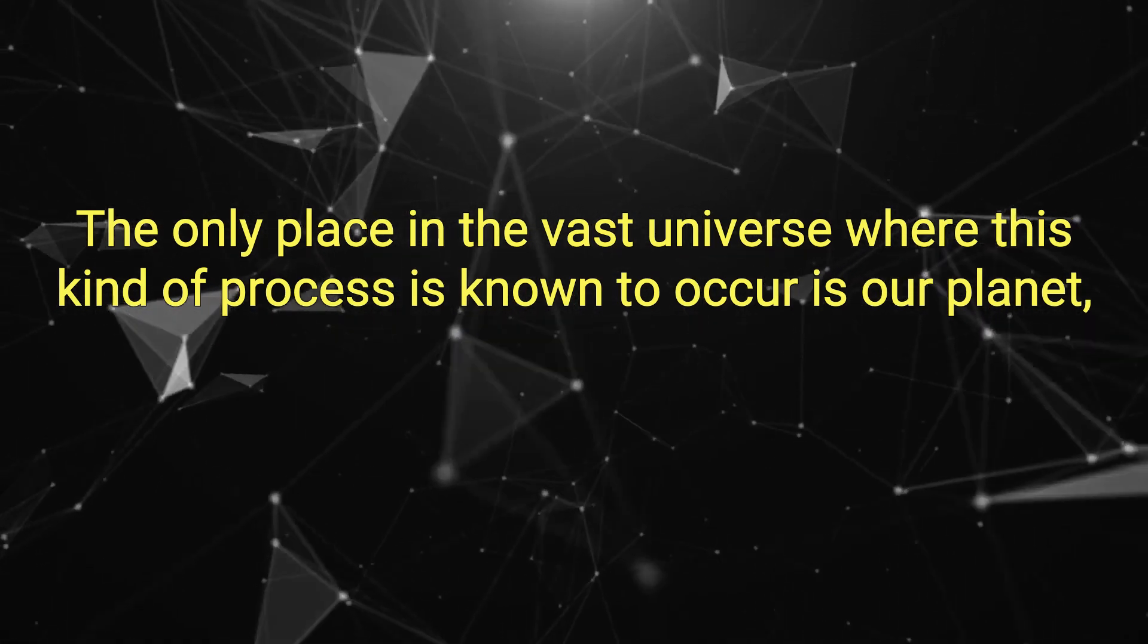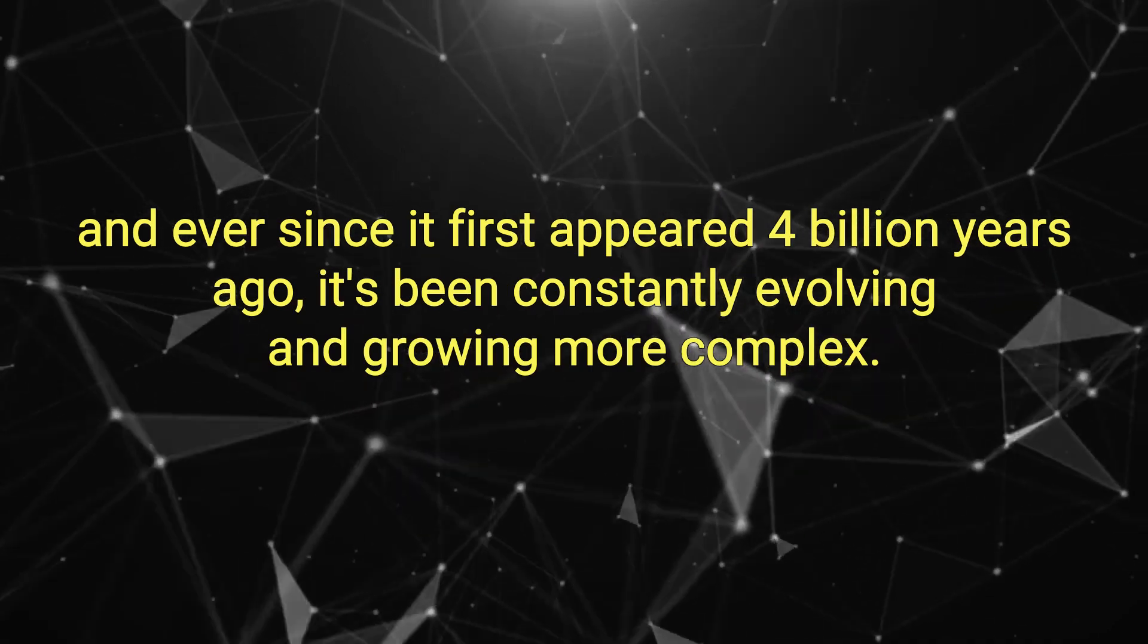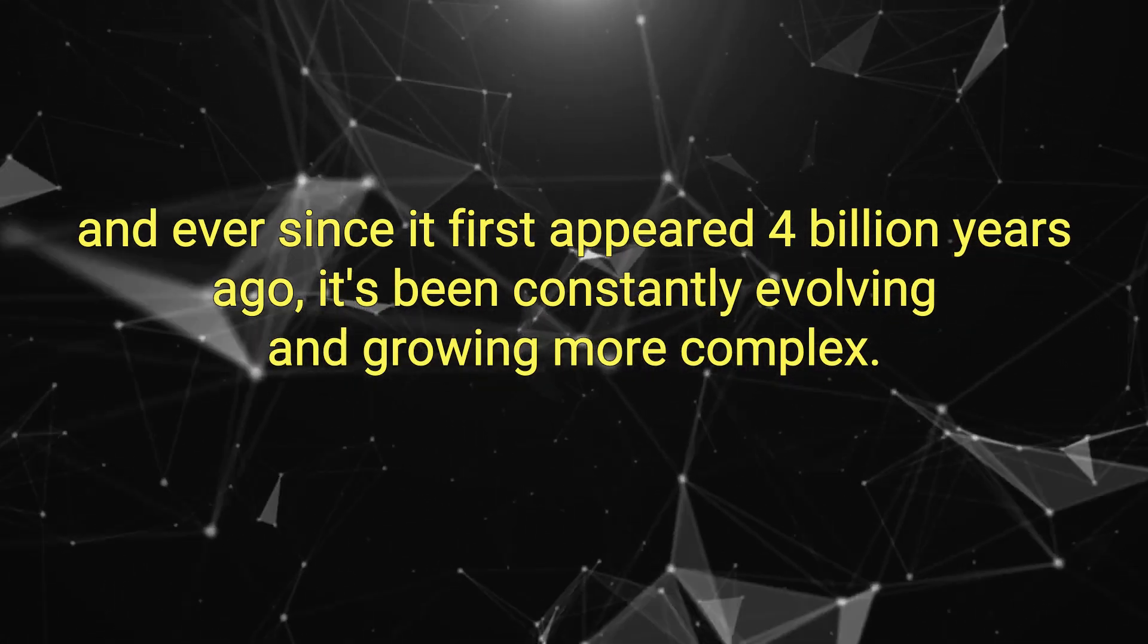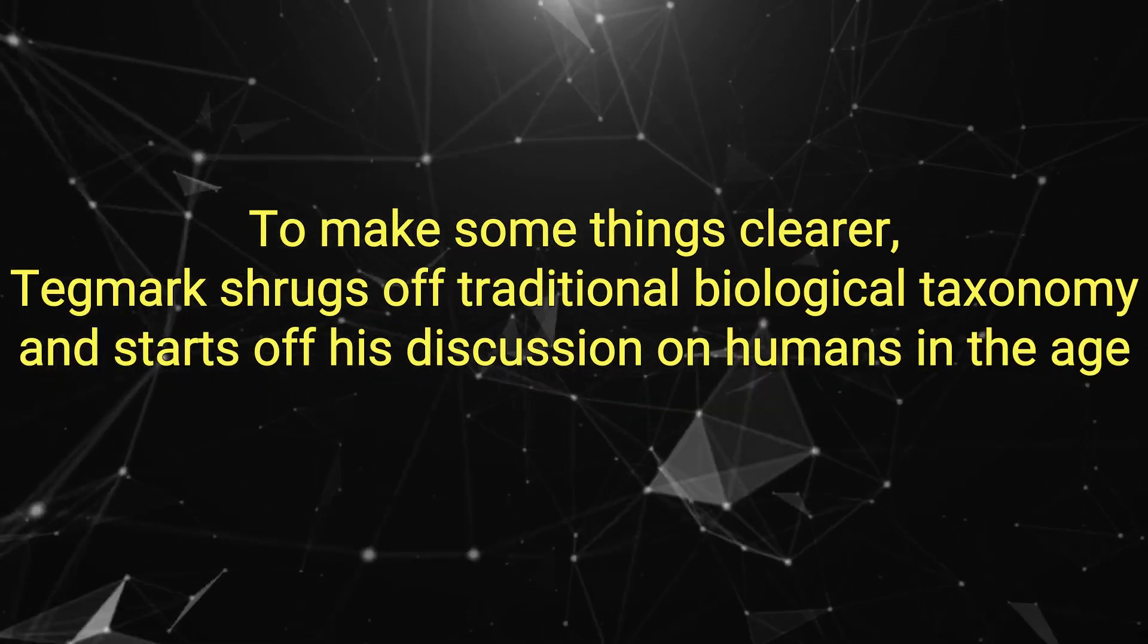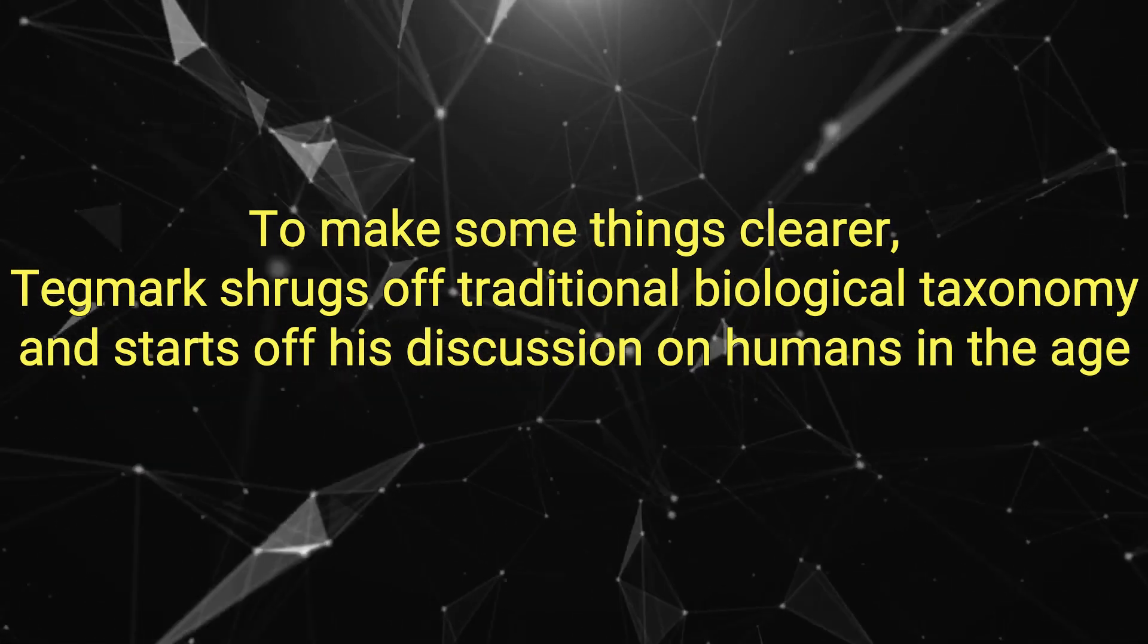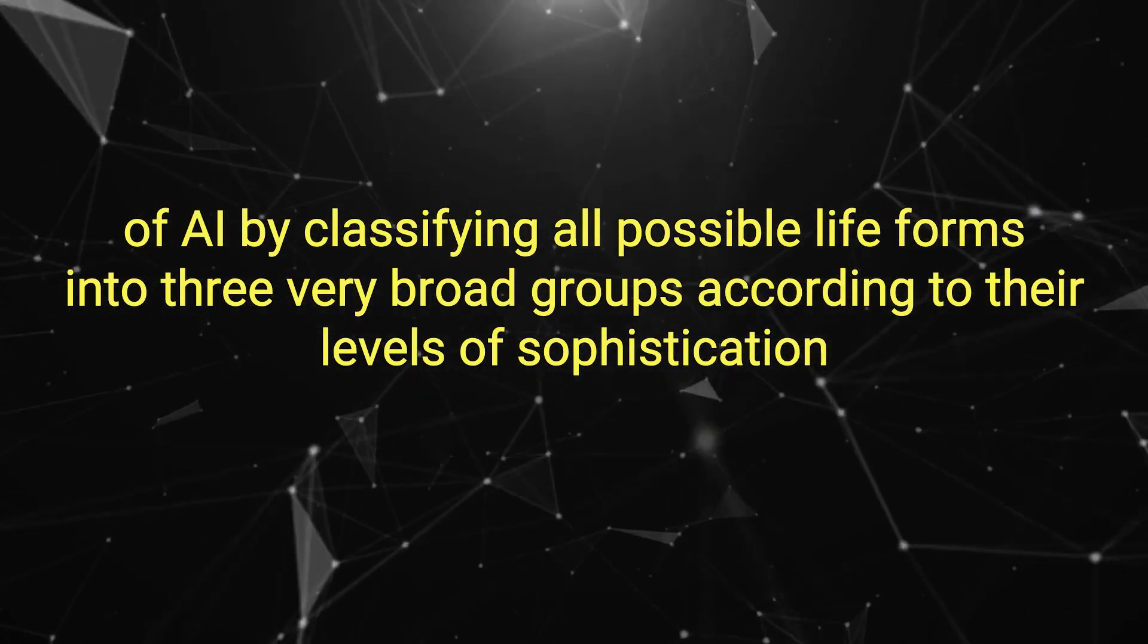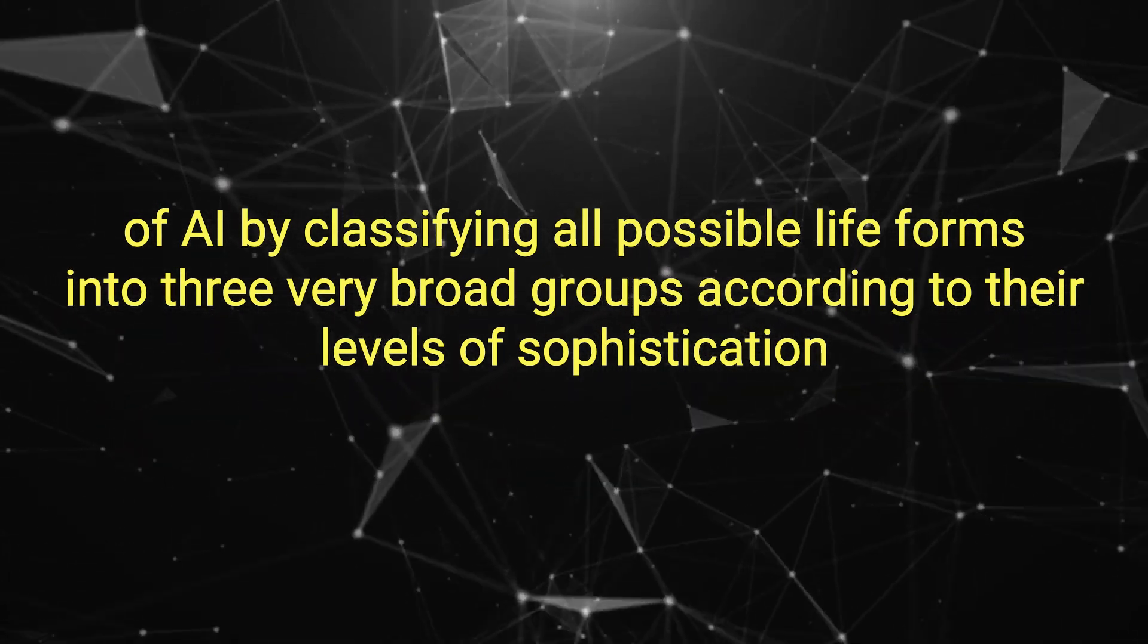The only place in the vast universe where this kind of process is known to occur is our planet. Ever since it first appeared 4 billion years ago, it's been constantly evolving and growing more complex. To make things clearer, Tegmark shrugs off traditional biological taxonomy and classifies all possible life forms into three very broad groups according to their levels of sophistication.